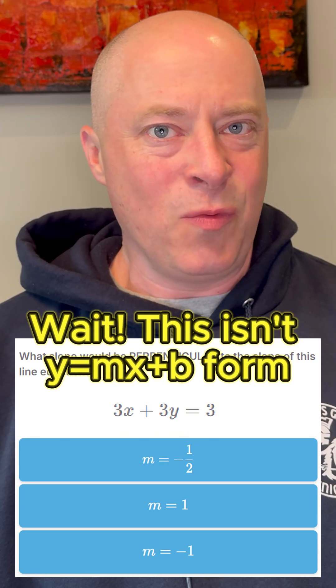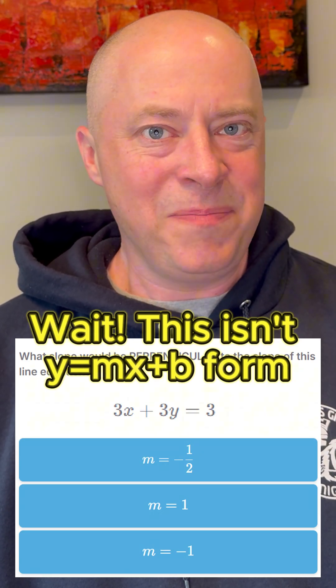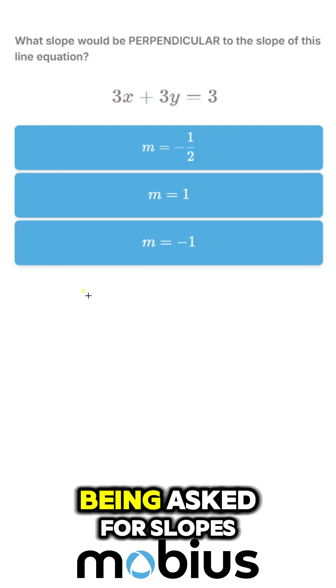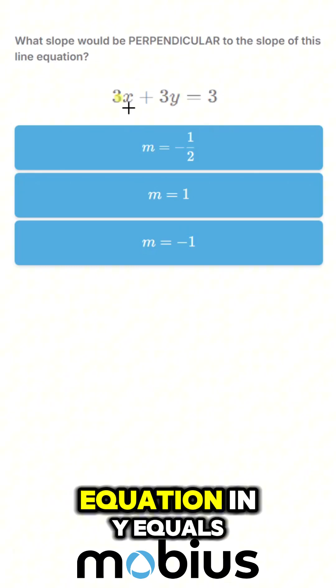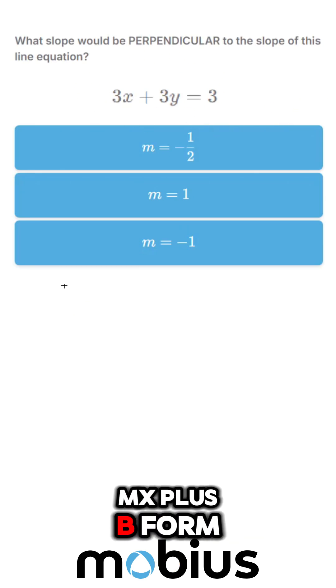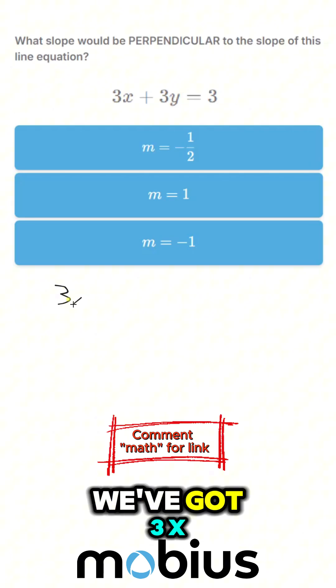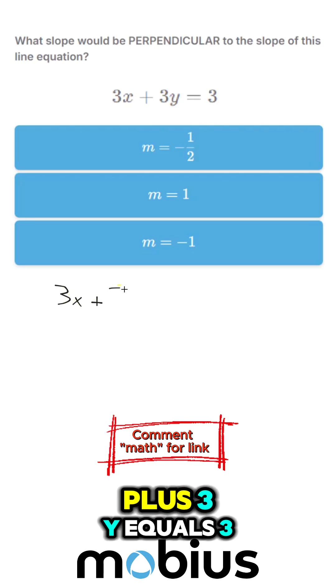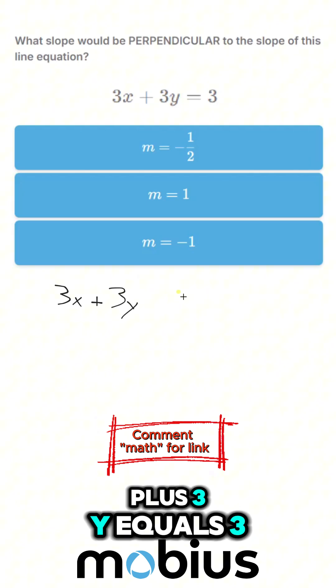Wait, this doesn't look like y equals mx plus b form. We're used to being asked for slopes when we have an equation in y equals mx plus b form, but we don't have that here. We've got 3x plus 3y equals 3.